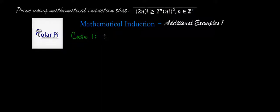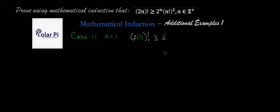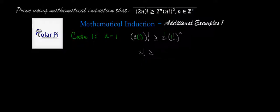Case one is where we let n equal one. When n is equal to one, we have two times n — so two times one — factorial on the left side, and we need to show that this is greater or equal to two to the power of n, which is one, times n factorial, so that's times one factorial — so one factorial squared. This is trivial: two factorial on the left is two; on the right, one factorial is one, squared is still one, and two to the first is two, so we have two on the right side. Two factorial is two, and clearly two is greater or equal to two.